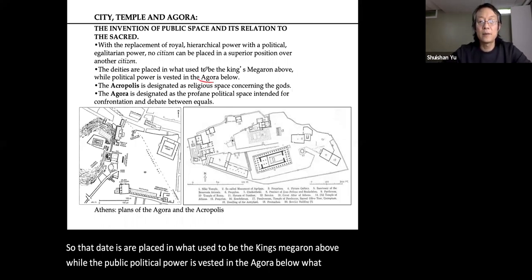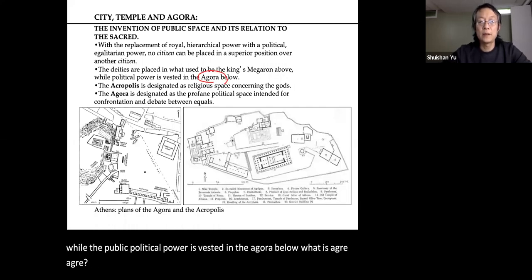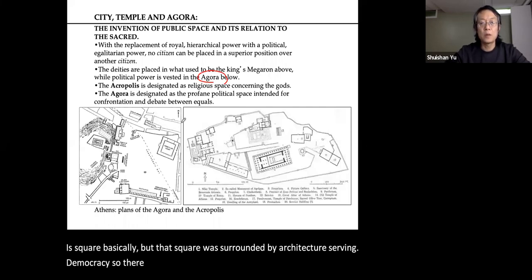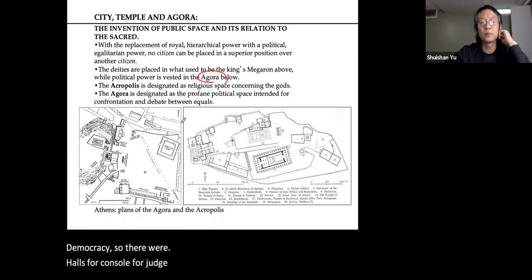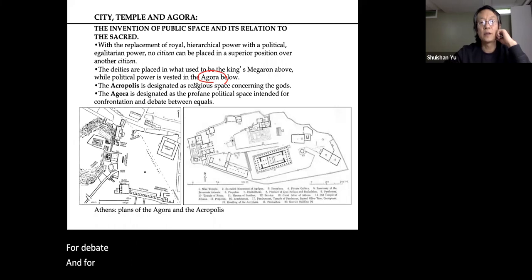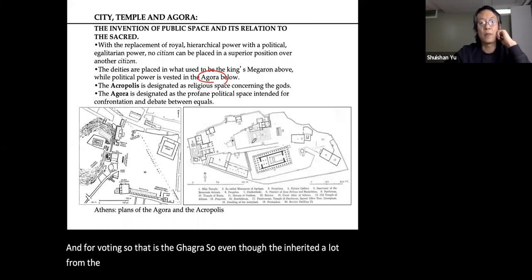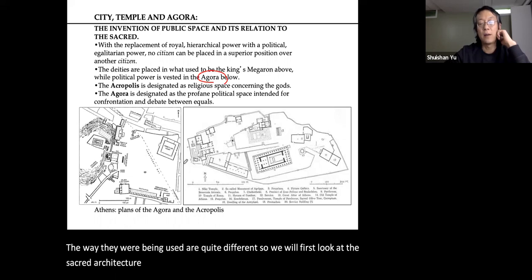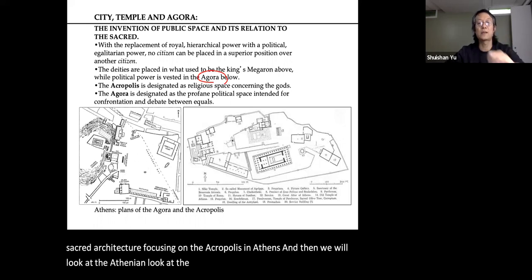The deities were placed in what used to be the king's megaron above, while political power was vested in the Agora below. The Agora was essentially a square surrounded by architecture serving democracy — halls for council, judgment, debate, and voting. Each Greek city had its own patron god or goddess — like Athena for Athens. We will first look at the sacred architecture focusing on the Acropolis in Athens, and then at the Athenian Agora with its civic architecture.